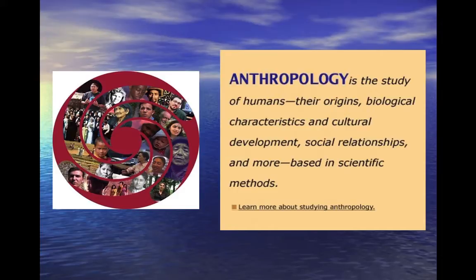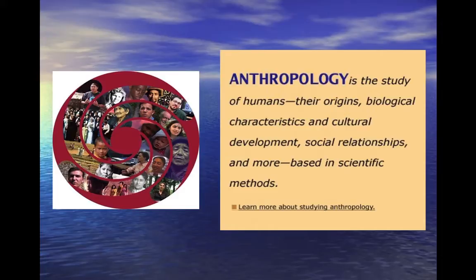Anthropology uses the scientific method — making questions, testing hypotheses, gathering research data, analyzing that data, and developing theories about who we are and where we came from. You can see a lot of similarities and differences between the three social sciences, but overall their goal is to study the human condition: what it means to be human and why we are the way that we are.